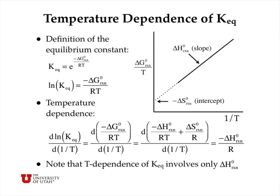When we look at the temperature dependence of the equilibrium constant, we have a slightly more complicated system. The definition of the equilibrium constant is K equals e to the minus delta G over RT, and so if we take the logarithm of both sides, we find that log K is equal to minus delta G over RT. If we then take the derivative of log K with respect to inverse temperature, we get the derivative of minus delta G over RT with respect to inverse temperature, and if we plug in delta G equals delta H minus T delta S, treating delta H and delta S as nearly independent of temperature, we get that the result is minus delta H for the reaction divided by R, the gas constant.